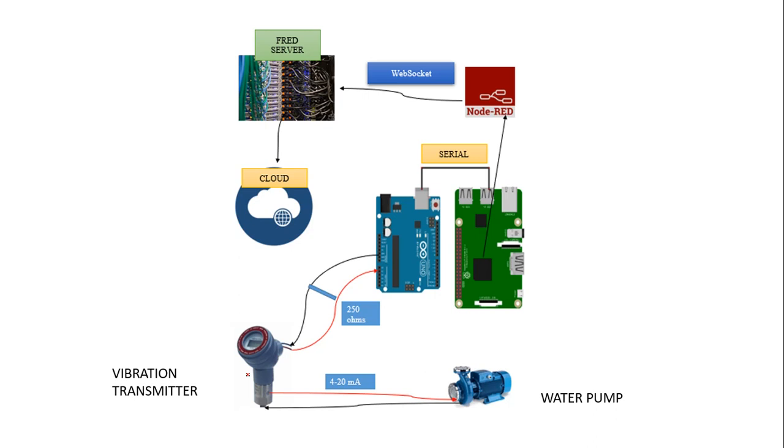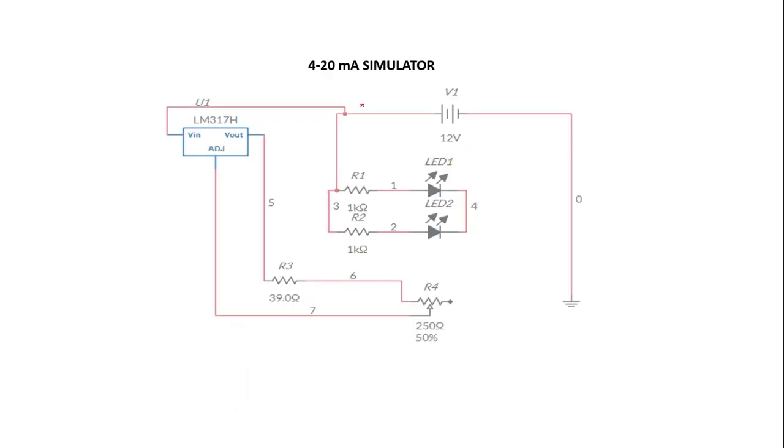We are going to need an LM317, two LEDs, one battery of 12 volts (you can also use a battery of 9 volts), two resistors of 1k ohms, one resistor of 39 ohms, and one potentiometer of 250 ohms. Our output is going to be here.